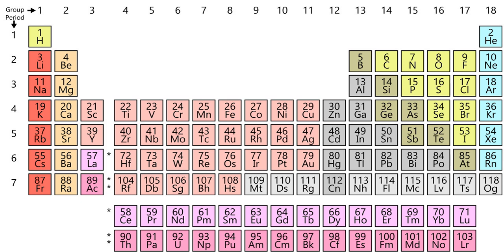Although all elements up to Oganesson have been discovered, of the elements above Hassium (108), only Copernicium, Nihonium, and Flerovium have known chemical properties, and only for Copernicium is there enough evidence for a conclusive categorization. The other elements may behave differently from what would be predicted by extrapolation due to relativistic effects — for example, Flerovium has been predicted to possibly exhibit some noble gas-like properties, even though it is currently placed in the carbon group. The current experimental evidence still leaves open the question of whether Flerovium behaves more like a metal or a noble gas.